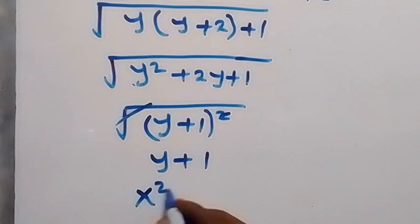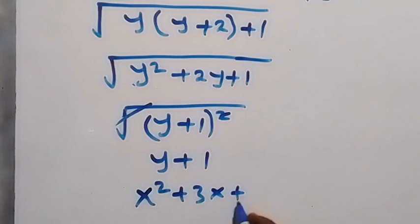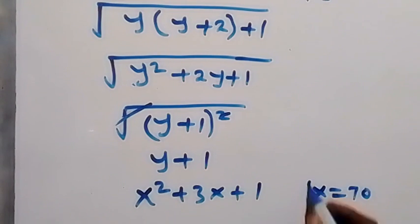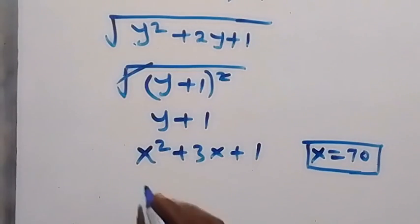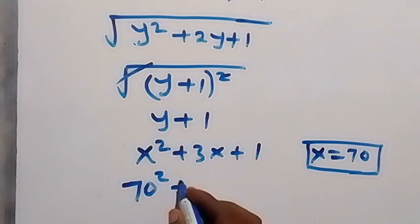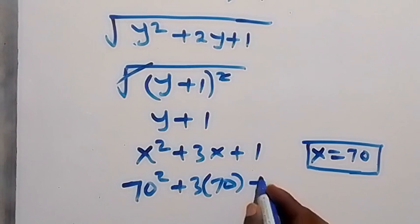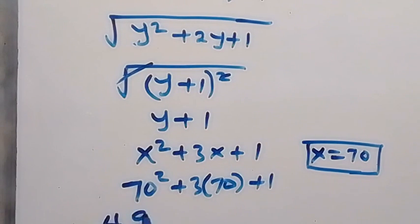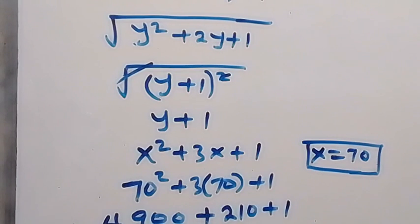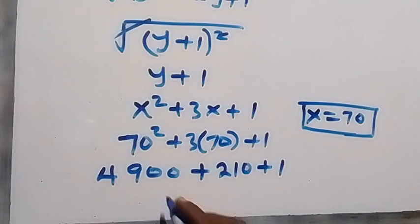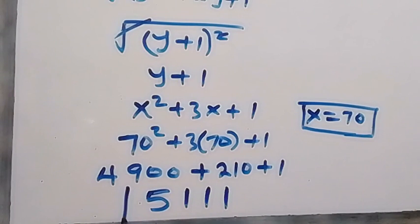Since y equals x squared plus 3x, the answer is x squared plus 3x plus 1. Substituting x equals 70 gives us 70 squared plus 3 times 70 plus 1, which is 4900 plus 210 plus 1. This gives us the final answer of 5111.